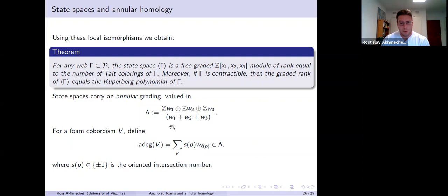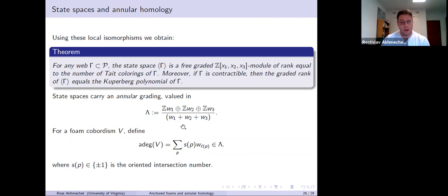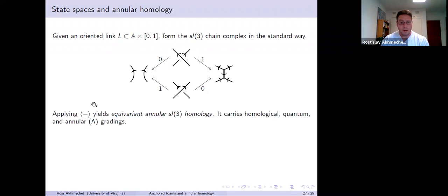I'll show one more word about this lambda grading later, but just to tie this in with link homology. If you have an oriented link L in the thickened annulus, you form the SL3 chain complex in the standard way. Maybe if someone is familiar with Khovanov homology, the SL2 story, but not the SL3 story, at these crossings you take 0-1 resolutions in some way, except now instead of just circles in the plane you have SL3 webs. And you apply this state space construction to the cube of resolutions, and you get this equivariant annular SL3 homology. It has homological grading, quantum grading, and you can see that the differential does not change the annular grading. So it also has an annular grading, this lambda grading.